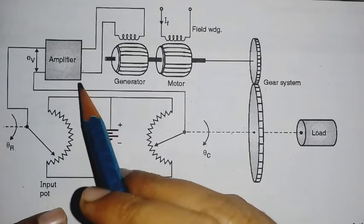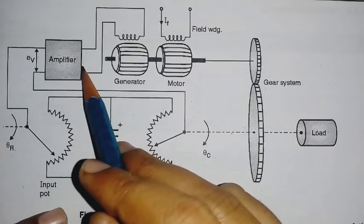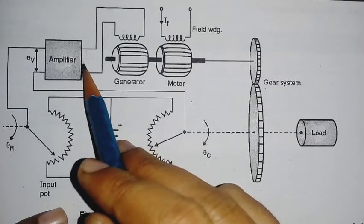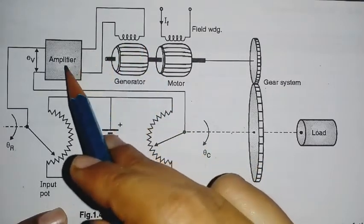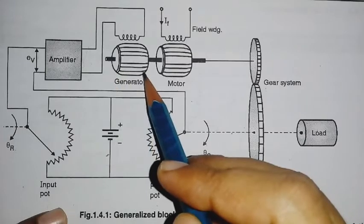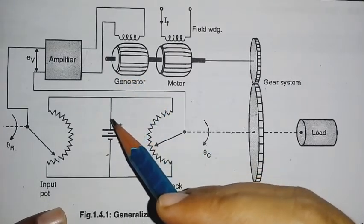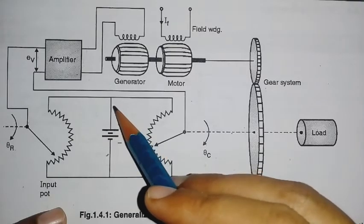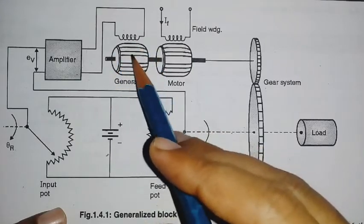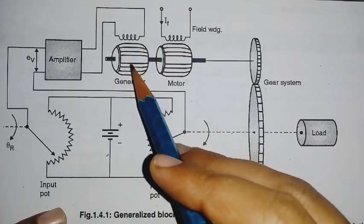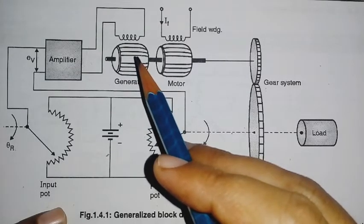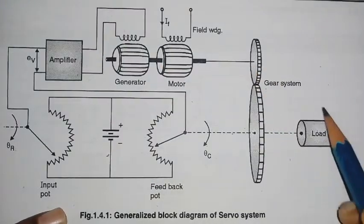This amplified signal is used for controlling the field current of the DC generator, which in turn provides armature voltage to the driving motor for driving the load through the gear system.